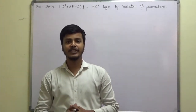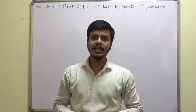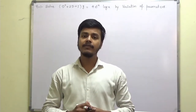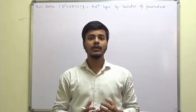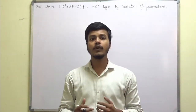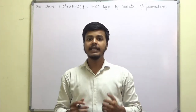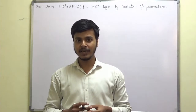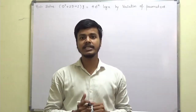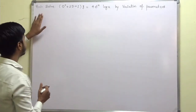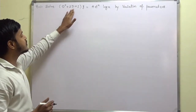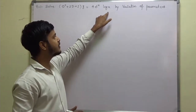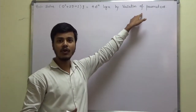Hello and welcome to this learning video. In the last learning video we started the topic variation of parameters, where we saw the working rule for problem solving followed by one example. Here in this learning video we are going to take one more problem on the same topic. The problem says: solve (D² + 2D + 1)y = 4e^(-x)·log(x) by variation of parameters.